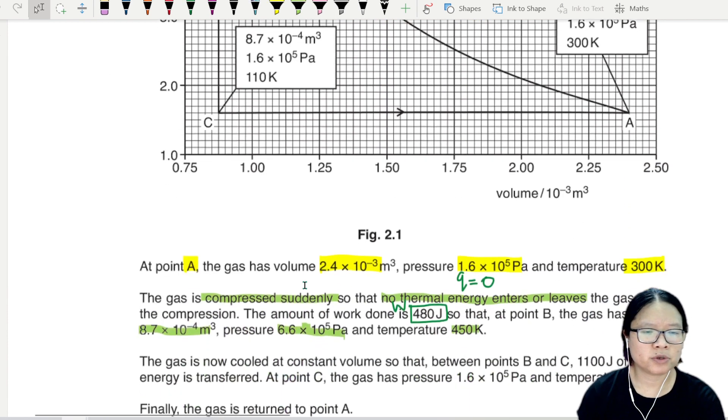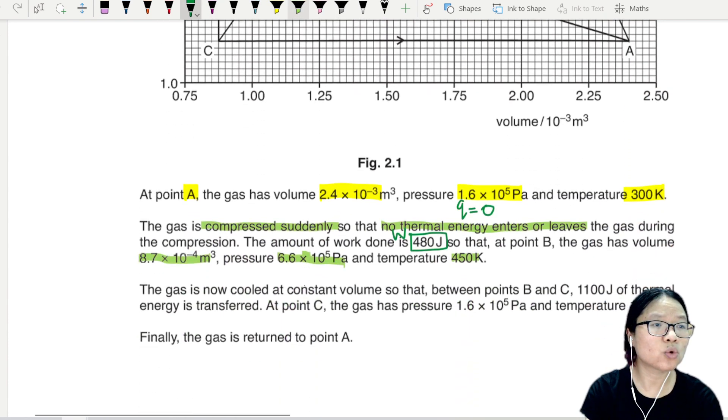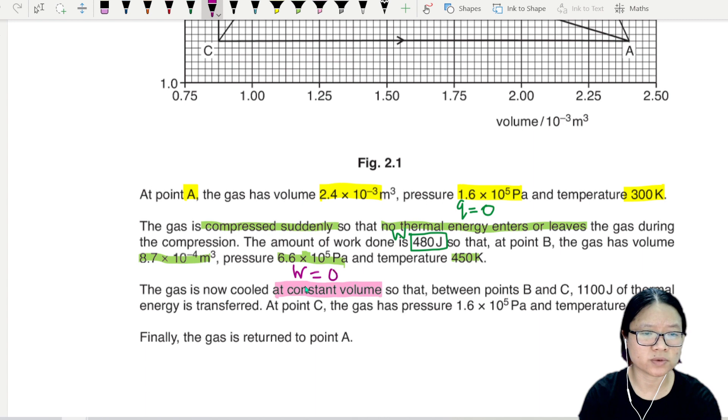We're going to continue. The gas is now at constant volume. When I say constant volume, w will be equal to zero because delta V is zero, and w is p delta V.